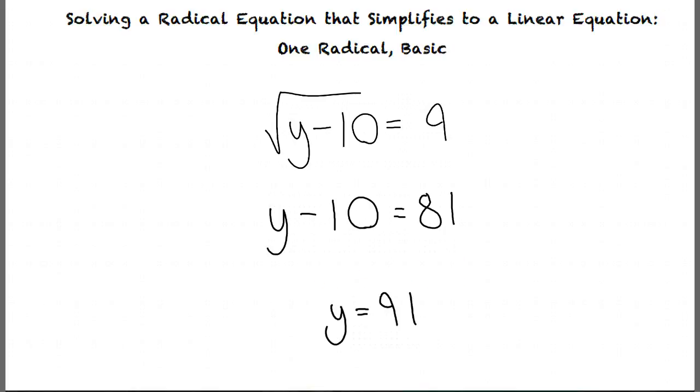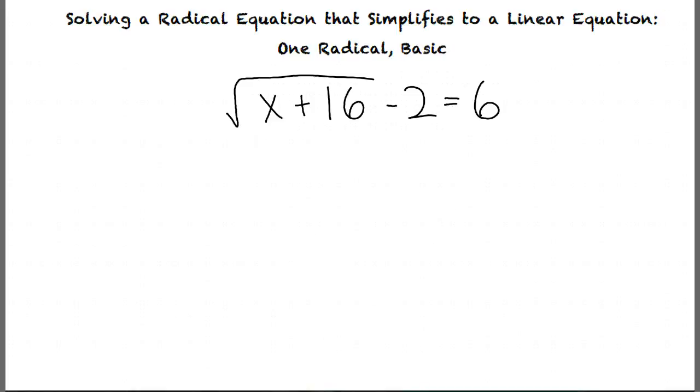What would happen if we had a problem such as square root of x plus 16 minus 2 equals 6, where there is another number attached to the square root? In this case, we will first isolate the square root by adding 2 to both sides.